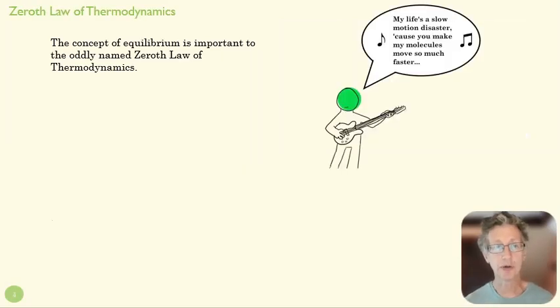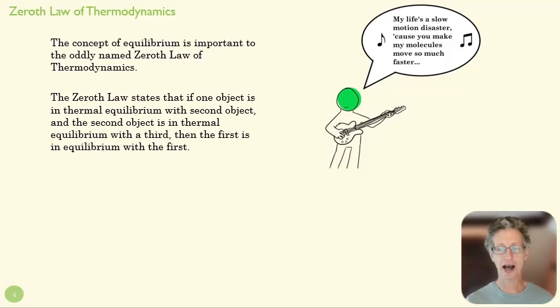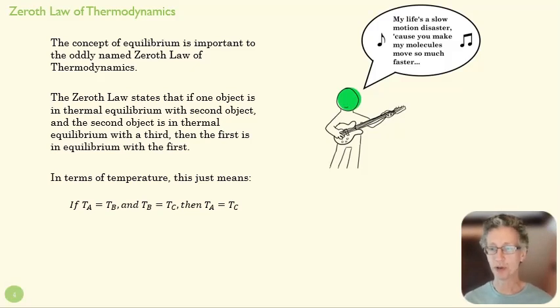Now, thermal equilibrium is a really important concept when we talk about what's called the zeroth law of thermodynamics. It's called the zeroth law, which is sort of an odd name, because it was formulated after the first and second laws of thermodynamics. So at some point, engineers and scientists said, wait, we need to establish what temperature is before we start talking about it in the first and second laws. So the zeroth law says, if object A and B are in thermal equilibrium with each other, and object B and C are in thermal equilibrium with each other, then A and C are also in thermal equilibrium with each other.